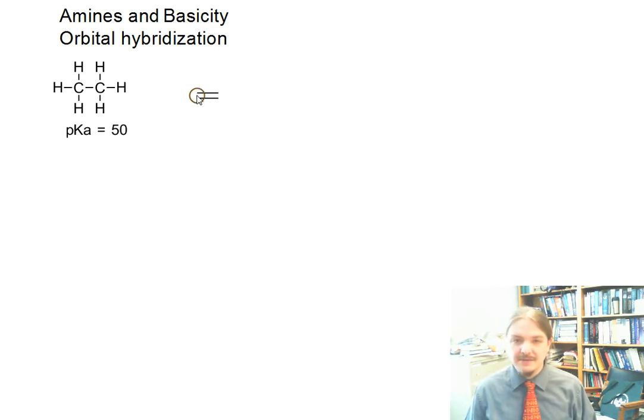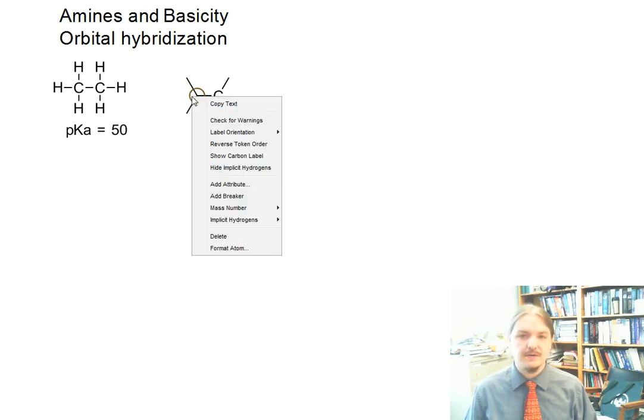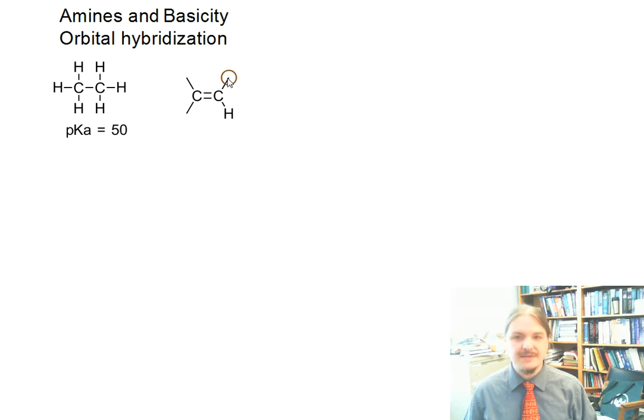Ethene, the simplest alkene, has a pKa estimated to be 44 by a variety of means. And then acetylene, or ethyne, actually has a measurable pKa, and it's significantly lower at 25.